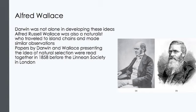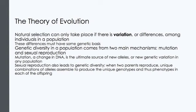Darwin made two main points in The Origin of Species. First, he presented evidence that each living species descended from a succession of ancestral species. In the first edition of his book, he did not use the word evolution, referring instead to descent with modification. Natural selection is a process in which organisms with certain inherited traits are more likely to survive and reproduce than are individuals with other traits. Natural selection can only take place if there is variation or differences among individuals in a population. This is key to understanding evolution, because evolution only occurs on a population-wide scale. Furthermore, genetic diversity in a population comes from two main mechanisms: mutation and sexual reproduction.